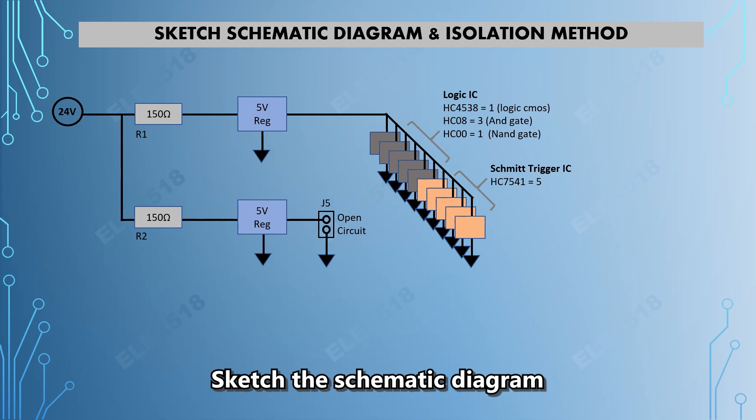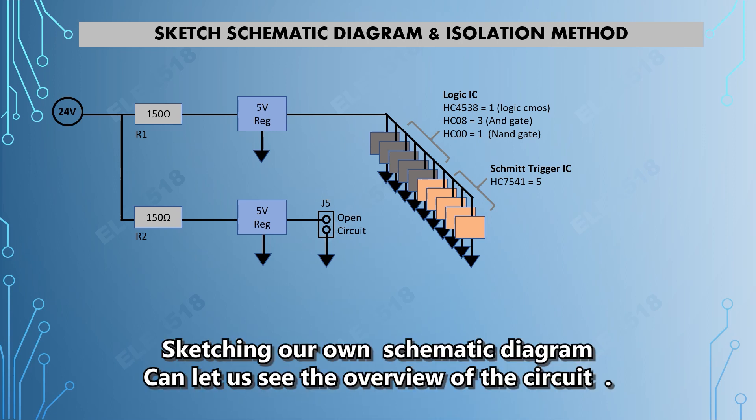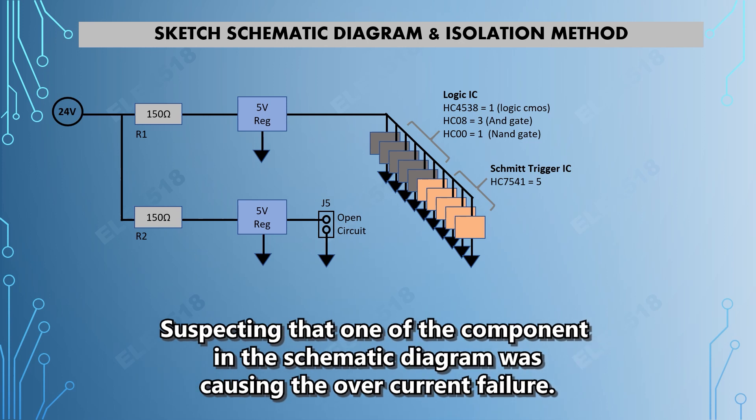The first thing that I did was to sketch the schematic diagram of the 24 volts line of the board in order for me to see the overview, and I was suspecting that one of the components here might be the root cause of overcurrent.